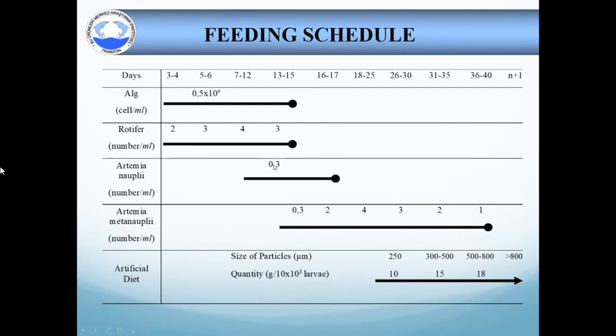Feeding schedule on day 3 to day 15. When the mouth opened, enriched rotifers are given. The density of rotifer in the rearing tank depends on the larval stage, and is maintained at 2 to 4 rotifers per milliliter. The density of rotifers in the tank is advised to be examined 4 times a day. The green algae, I mean Nannochloropsis, are maintained at 500,000 cells per milliliter in the rearing tank. Algae in the larval rearing tank serves as food for rotifers.